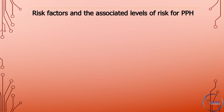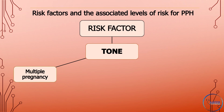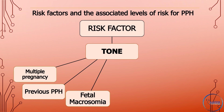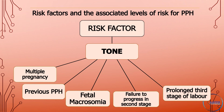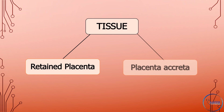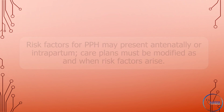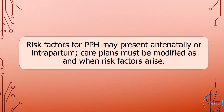Risk factors and associated levels of risk for postpartum hemorrhage include — Tone: multiple pregnancy, previous postpartum hemorrhage, fetal macrosomia, failure to progress in second stage, prolonged third stage of labor, and general anesthesia. Thrombin: preeclampsia. Tissue: retained placenta and placenta accreta. Trauma: episiotomy and perineal laceration. Risk factors may present antenatally or intrapartum, and care plans must be modified as and when risk factors arise.